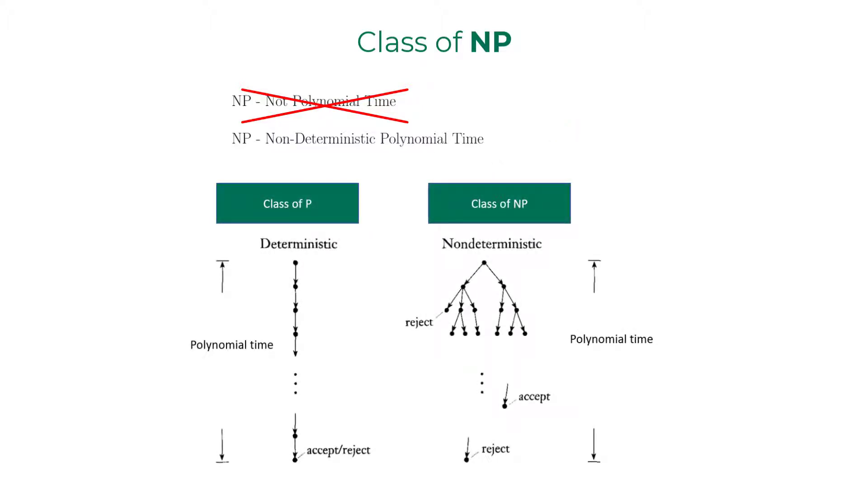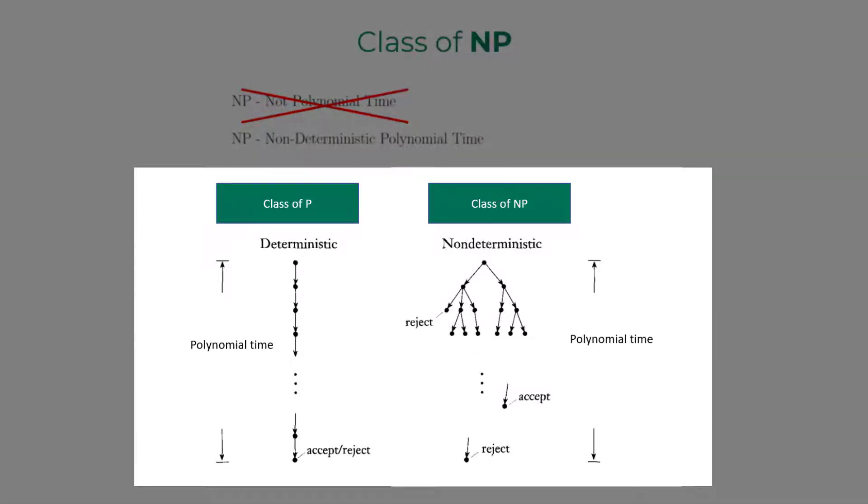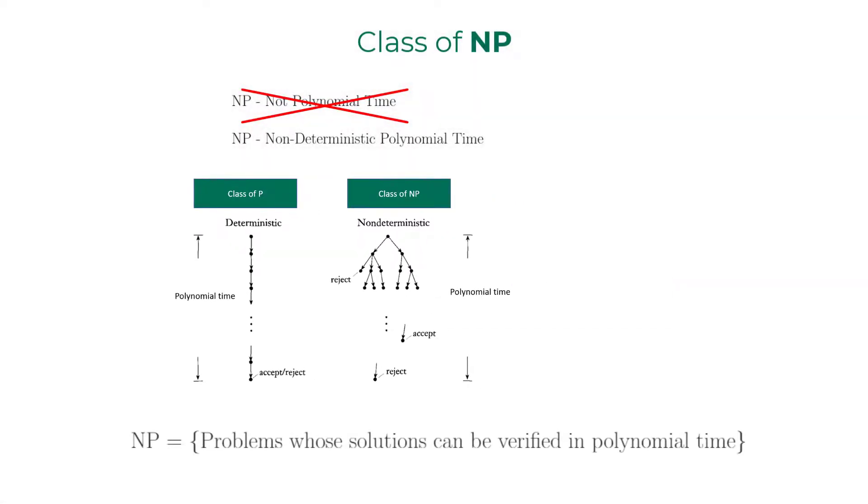Now the class of NP. The most common misconception new learners might fall to is that NP means not polynomial time, but nope. It is the class of problems that can be solved in non-deterministic polynomial time. These problems can be decided on a non-deterministic Turing machine in polynomial time. The solutions for these problems can be verified in polynomial time on a deterministic Turing machine.